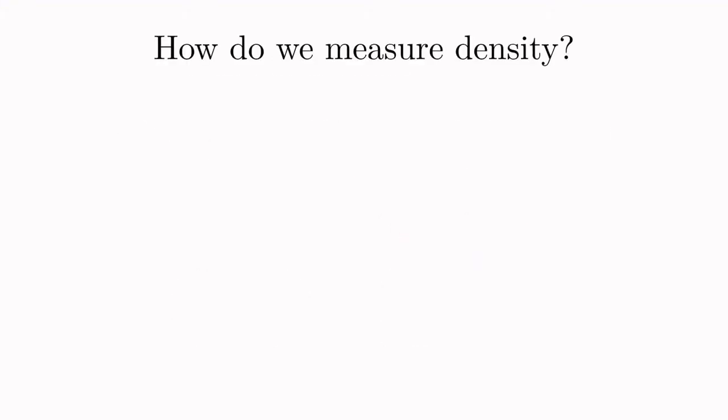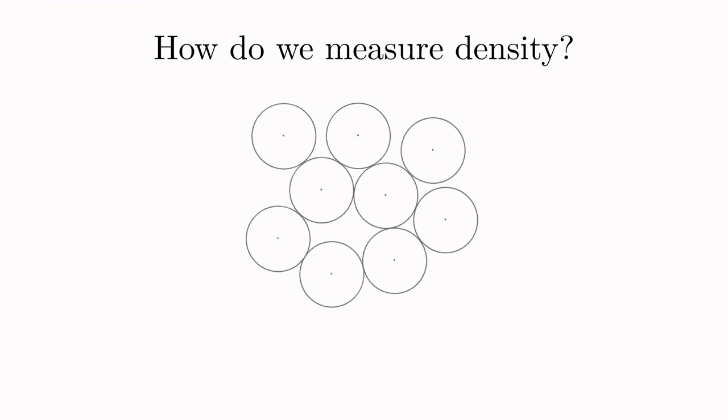Next up we need to clarify how we're actually going to measure density. So let's look at some generic circle packing like this one. I would argue that it's actually pretty clear how to define density. As long as we give ourselves a finite boundary region to work with like this one. We can now look at the area of the packing inside the region which is highlighted yellow here and divide that by the total area of the region like this.